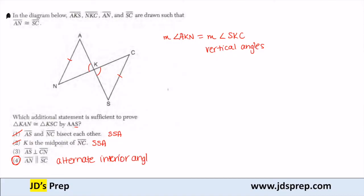Because if I know that they're parallel, if AN and SC are parallel, then using alternate interior angles, I can get that angle A would be congruent to angle S. And if I can prove that congruence with alternate interior angles, then the triangles would be congruent.